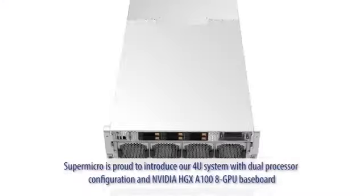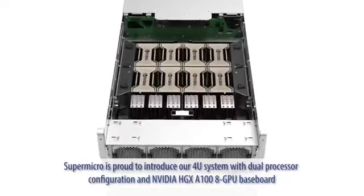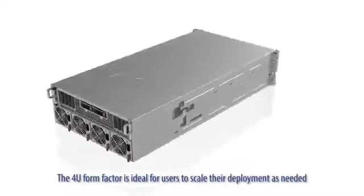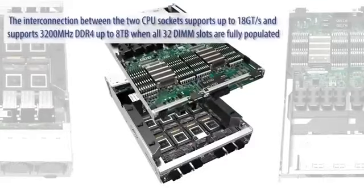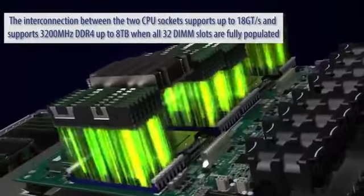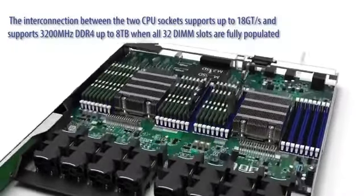Proud to introduce our 4U system with dual processor configuration and NVIDIA HGX A100 8GPU baseboard. The 4U form factor is ideal for users to scale their deployment as needed. It has the right mix of CPUs to GPUs in the system. The interconnection between the two CPU sockets supports up to 18 gigatransfers per second and supports 3200 MHz DDR4 up to 8 terabytes when all 32 DIMM slots are fully populated.